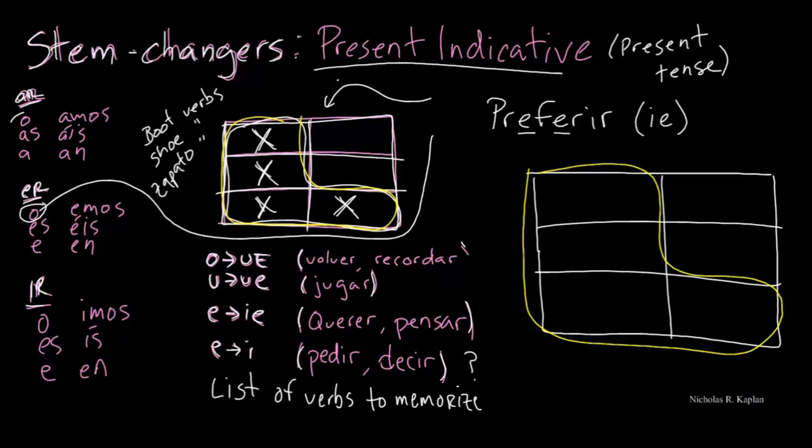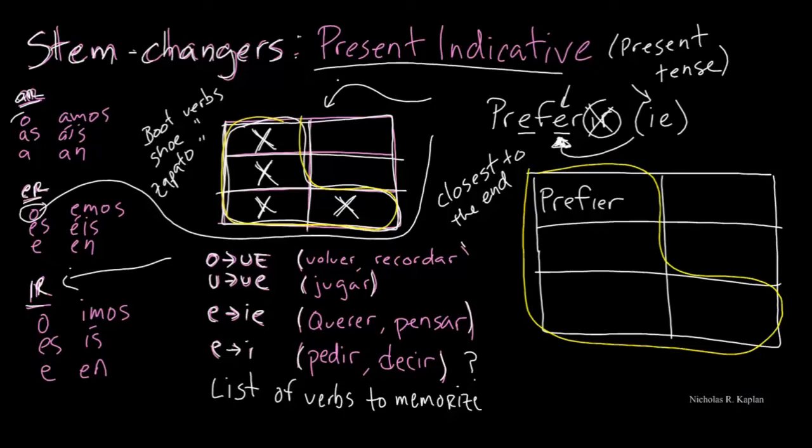But then I notice we have a problem. There are two E's. Well, you can't change both of them. So which one do you change? You change the one closest to the end. So this one is closer to the end. So that's the one that we're going to use when we change the E to an IE. We'll leave the first part. And now that E that we have right here changes to an IE. We take off our IR. We're in an IR verb over here. And we're putting it into the yo form, prefiero.